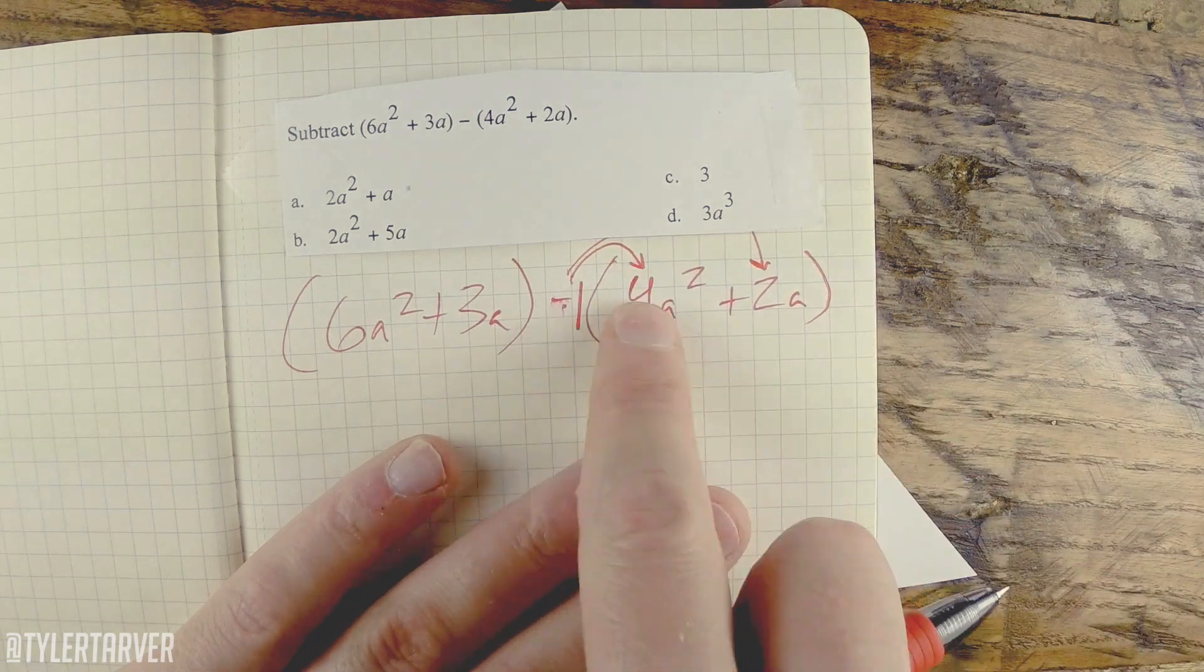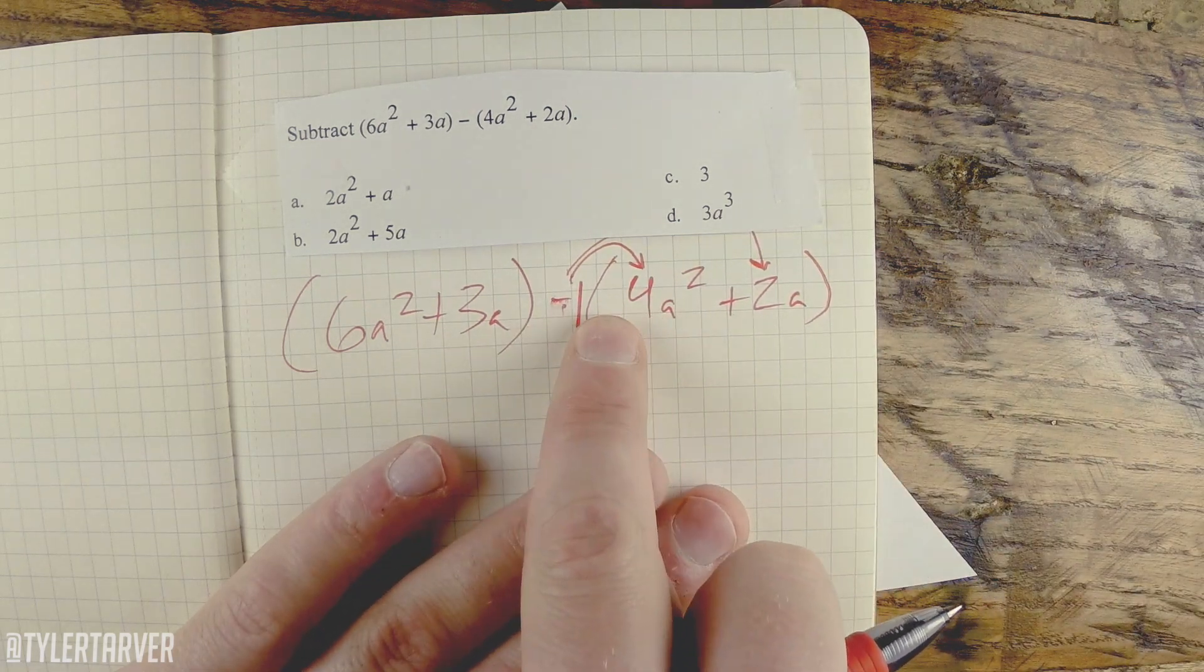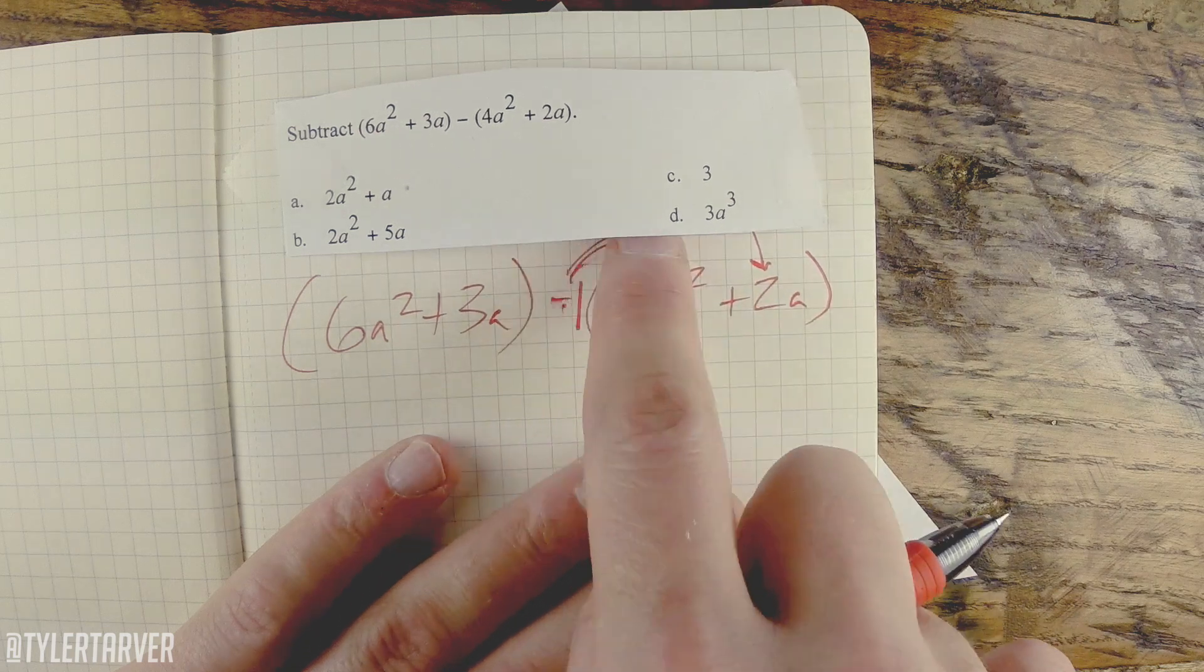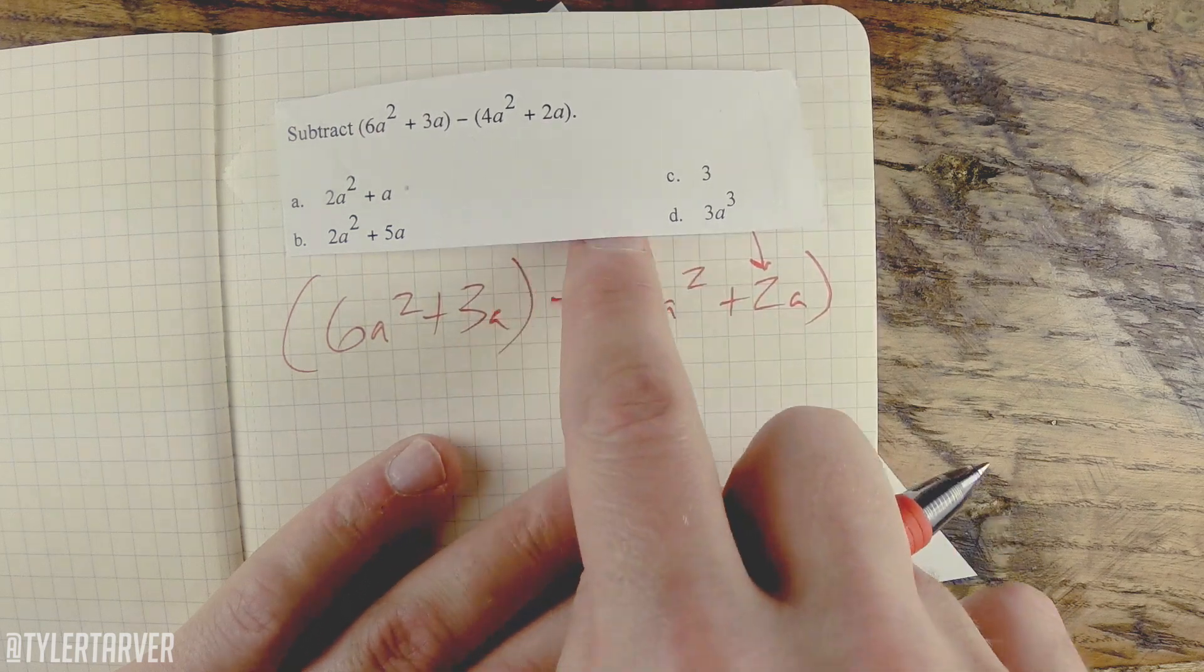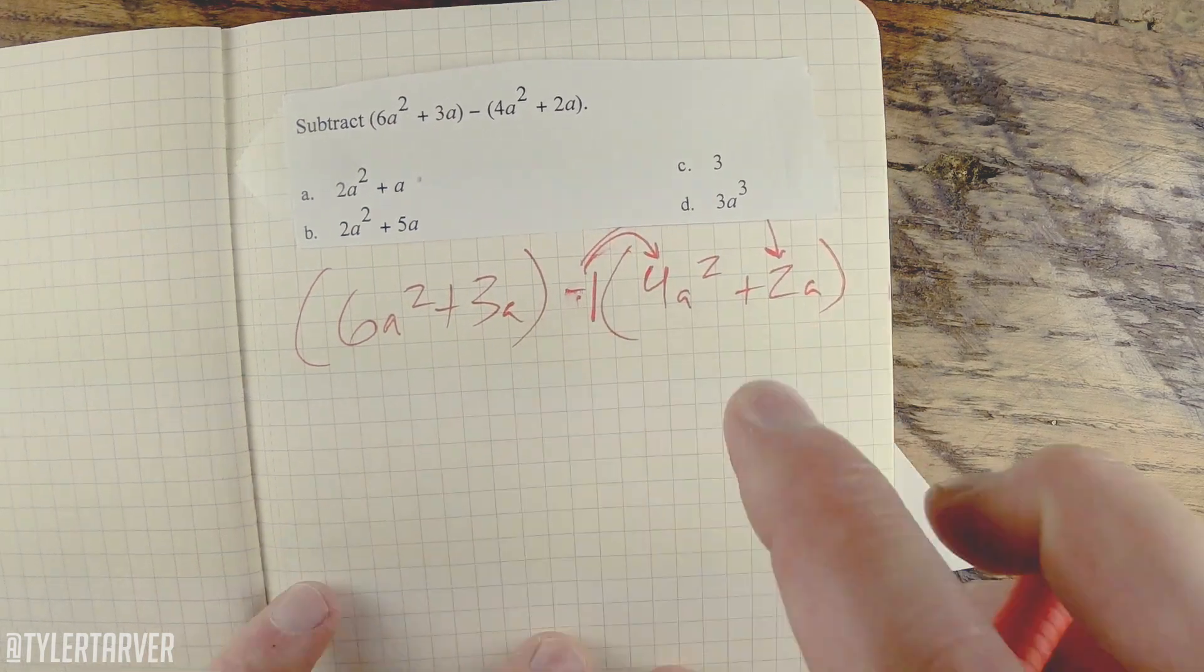So you have to distribute the negative 1 into both of these. That's where people mess up. They'll give the negative to the 4a because it's next to it, but they will very often forget to put it on this second one. So let's rewrite it.